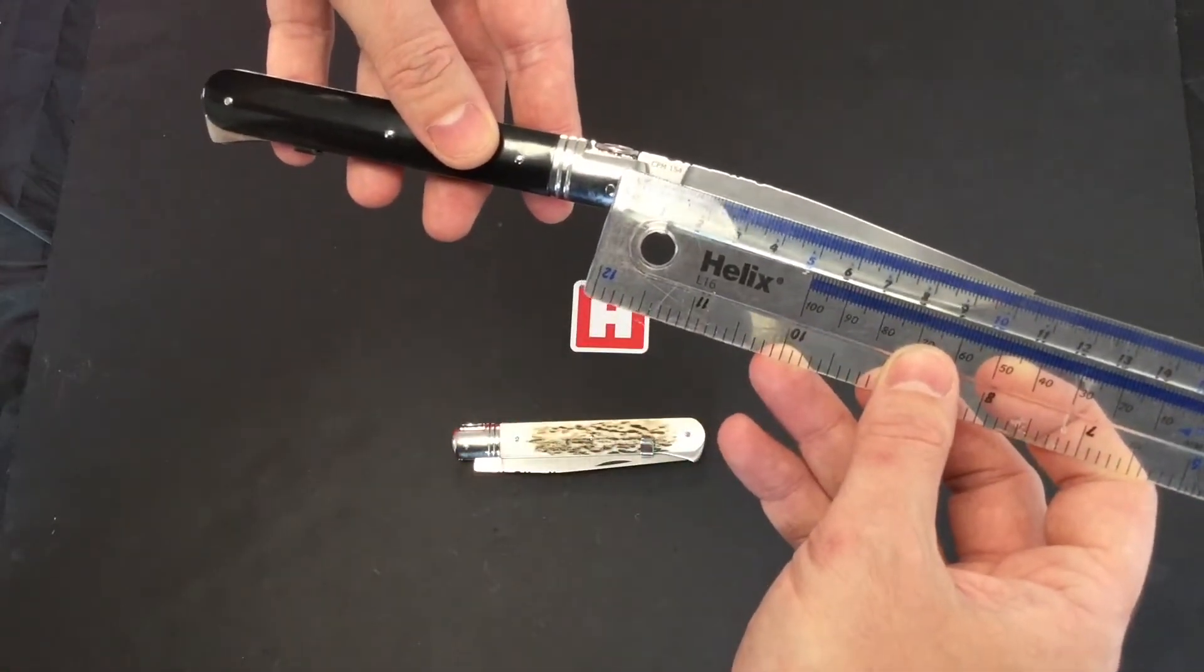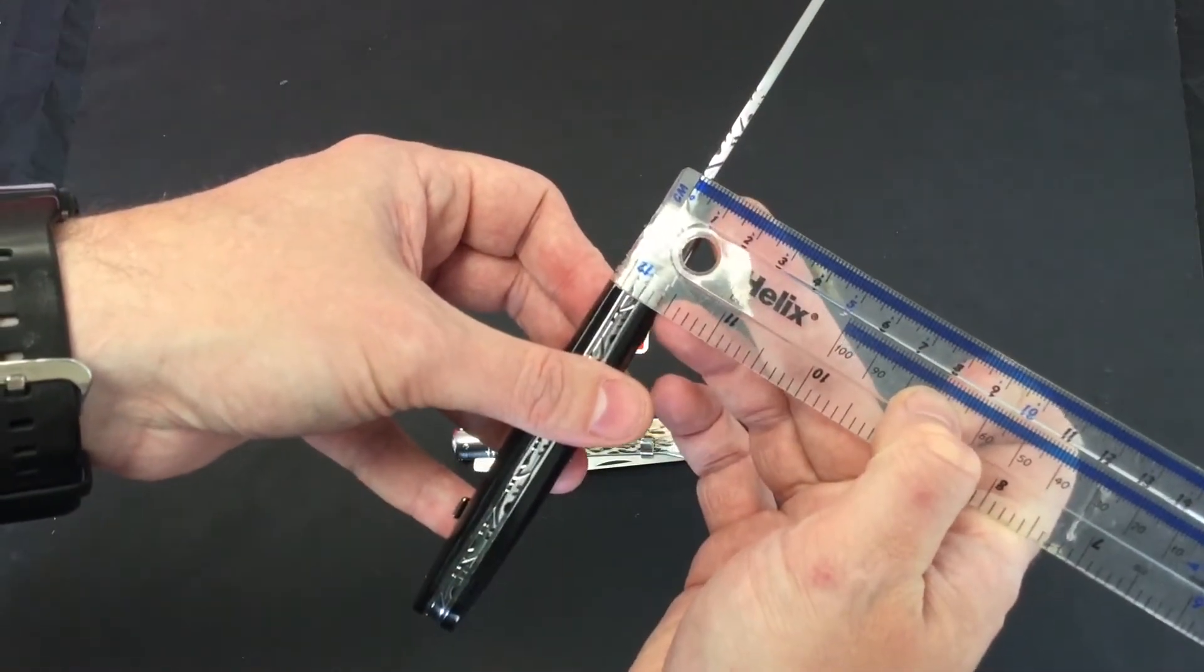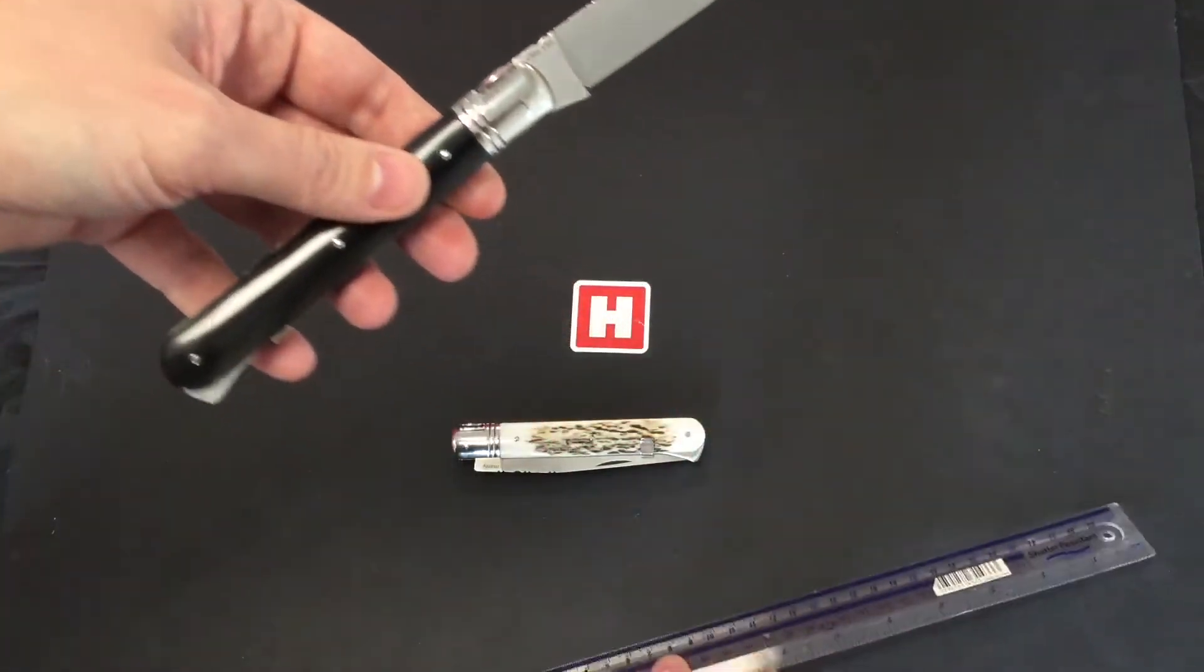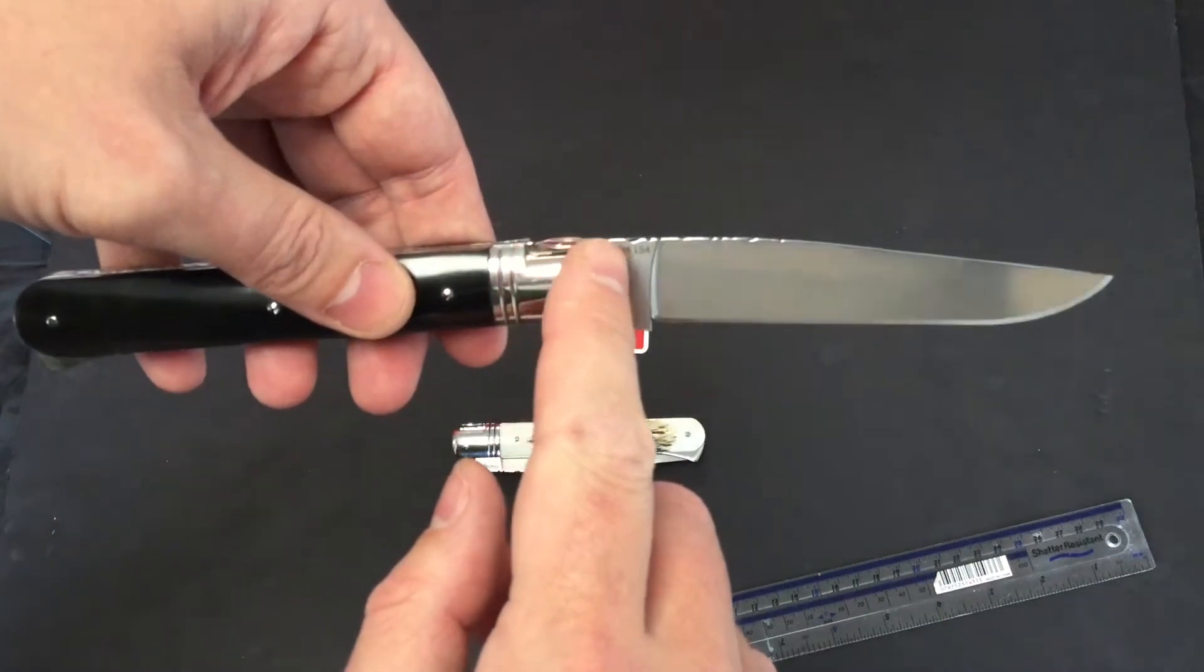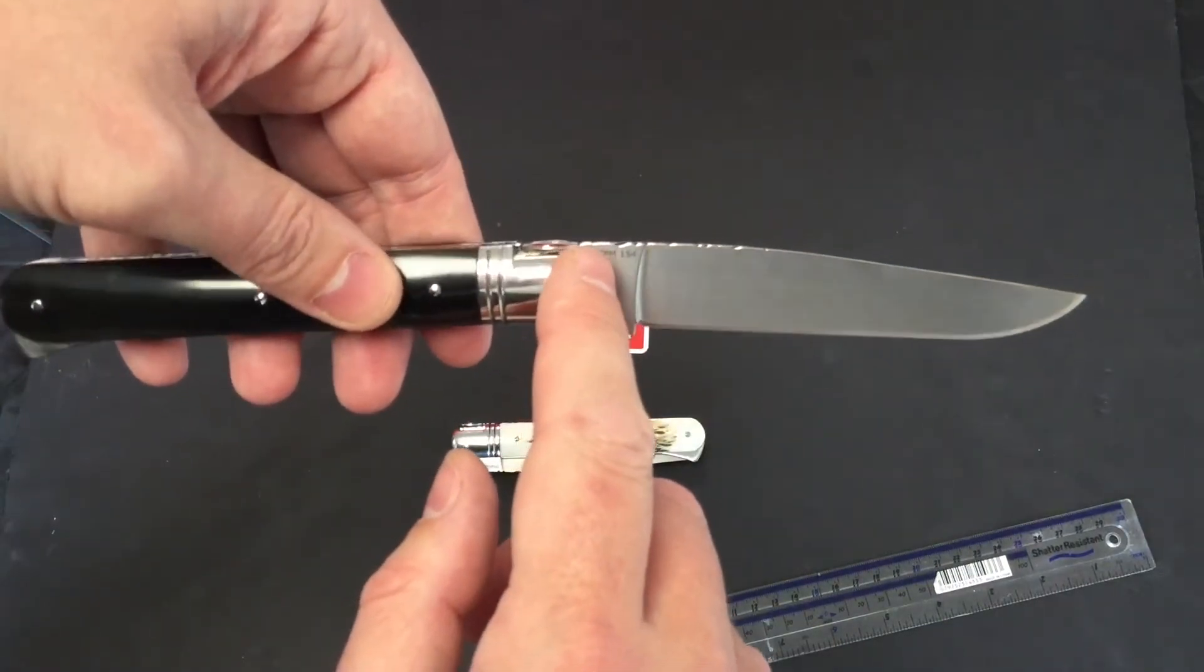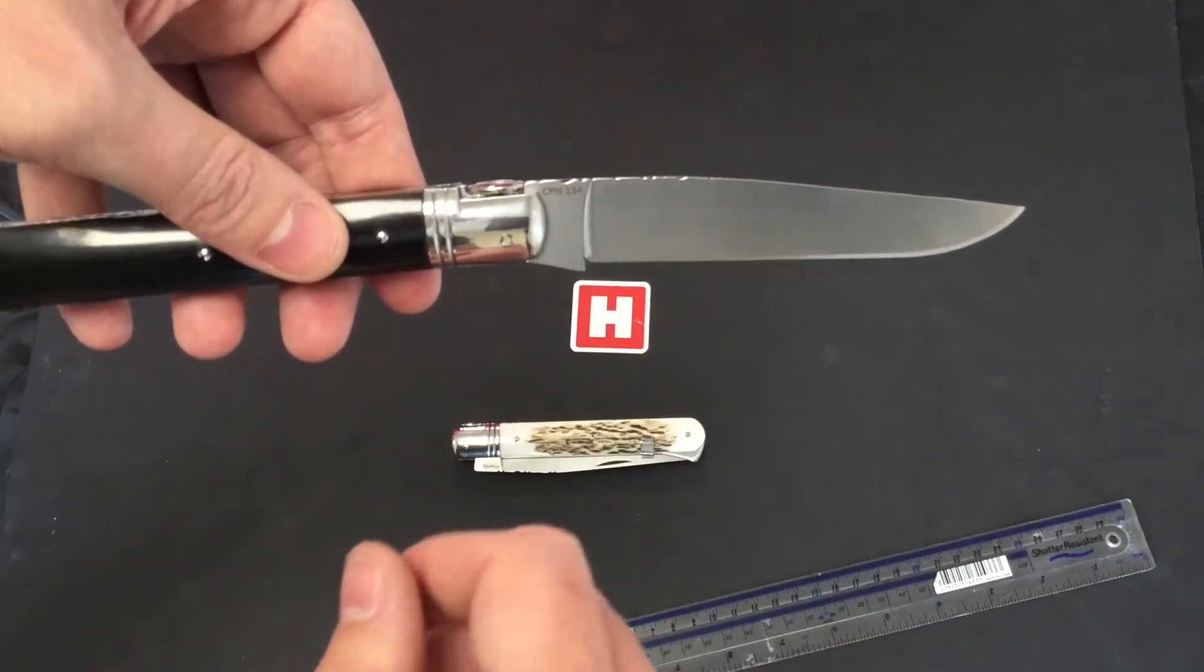We've got a blade of ten and a half centimeters and approximately three millimeters on the back. You can see there CPM 1.4 steel, premium steel.